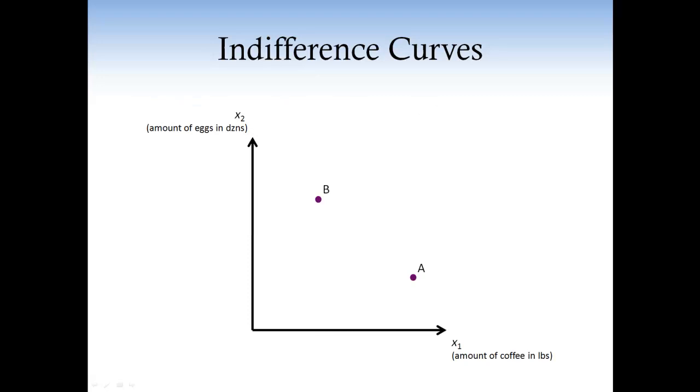Graphically, given any two baskets, A and B, the average basket between them is always on the segment that connects the two points, A and B. Is it clear now? Yeah.